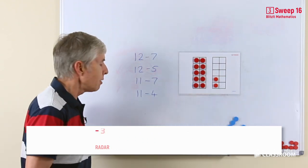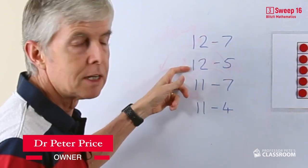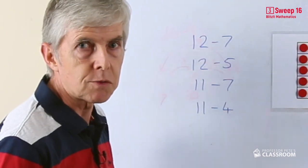Now in subtraction there are only four remaining facts: 12 take away 7 and 12 take away 5, and 11 take away 7 and 11 take away 4, and of course those are turnarounds for each other.